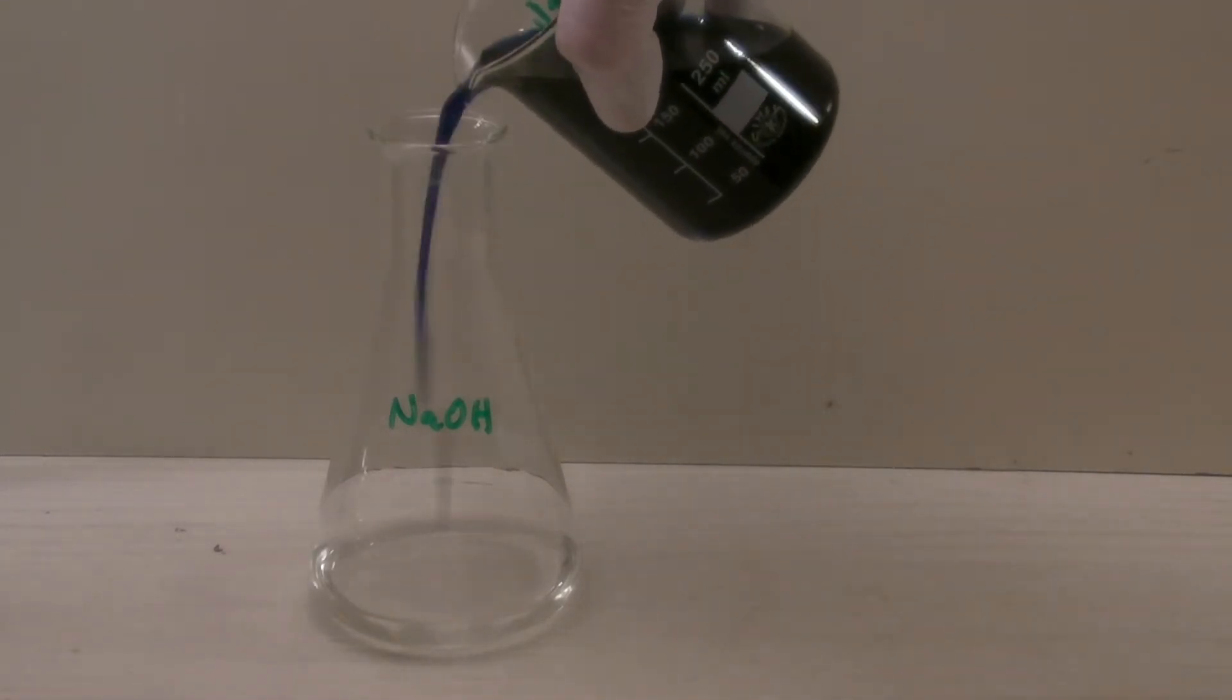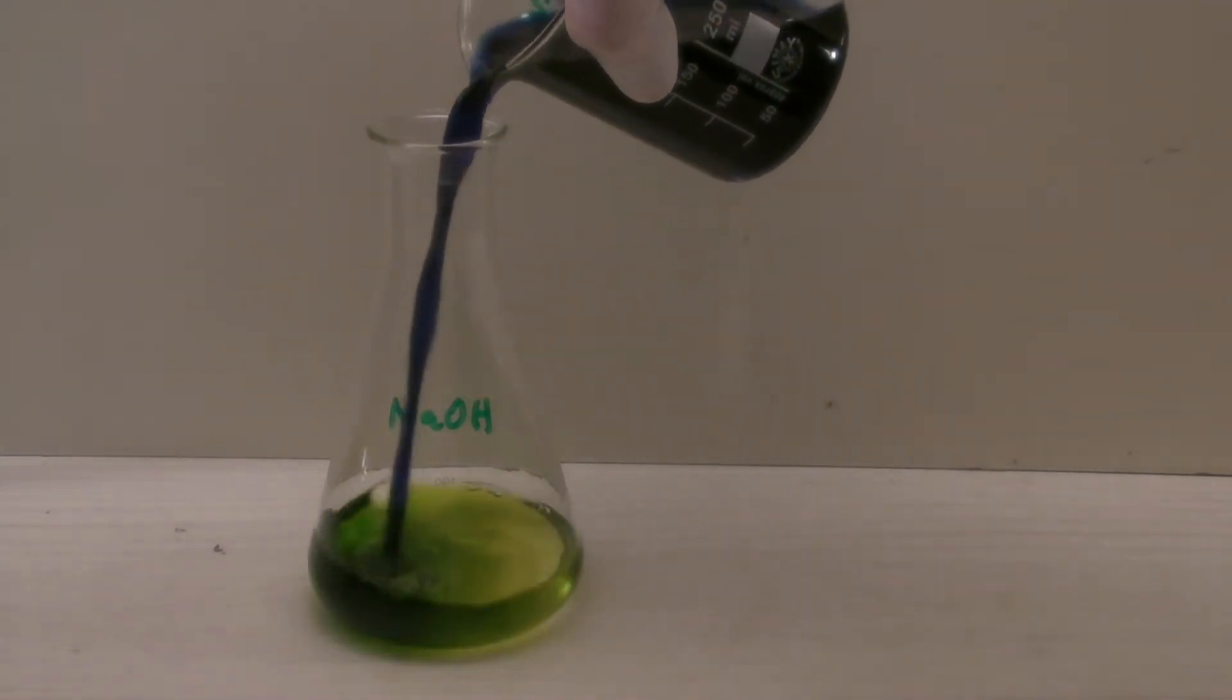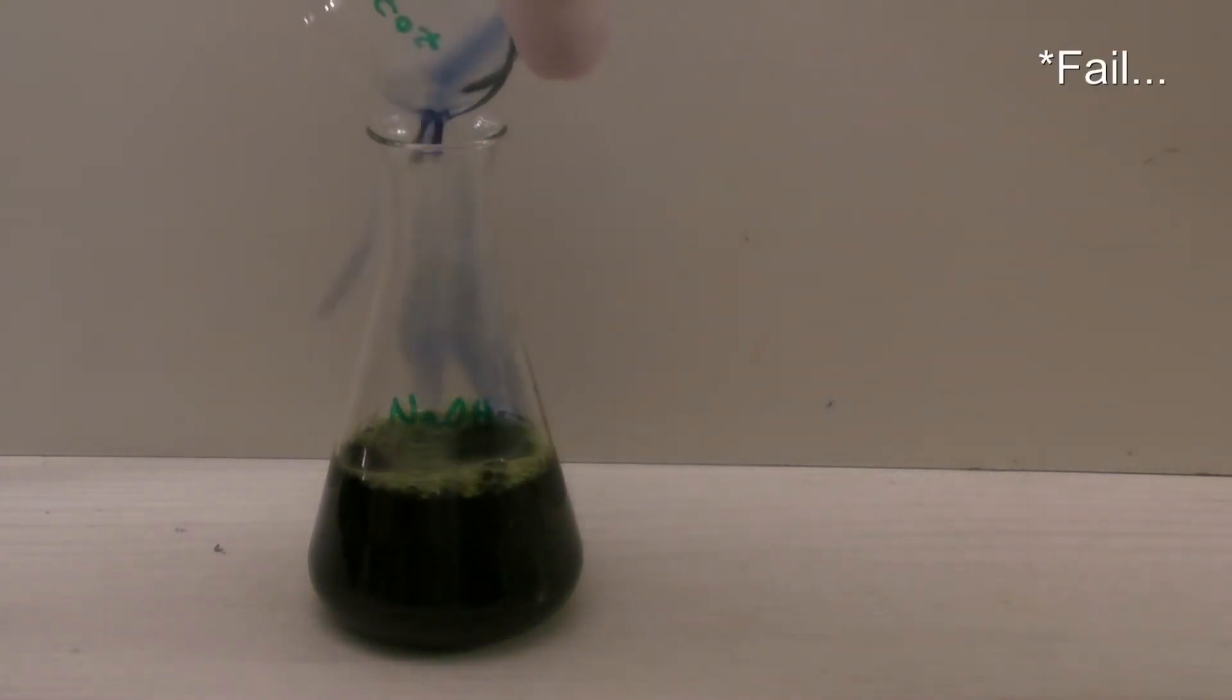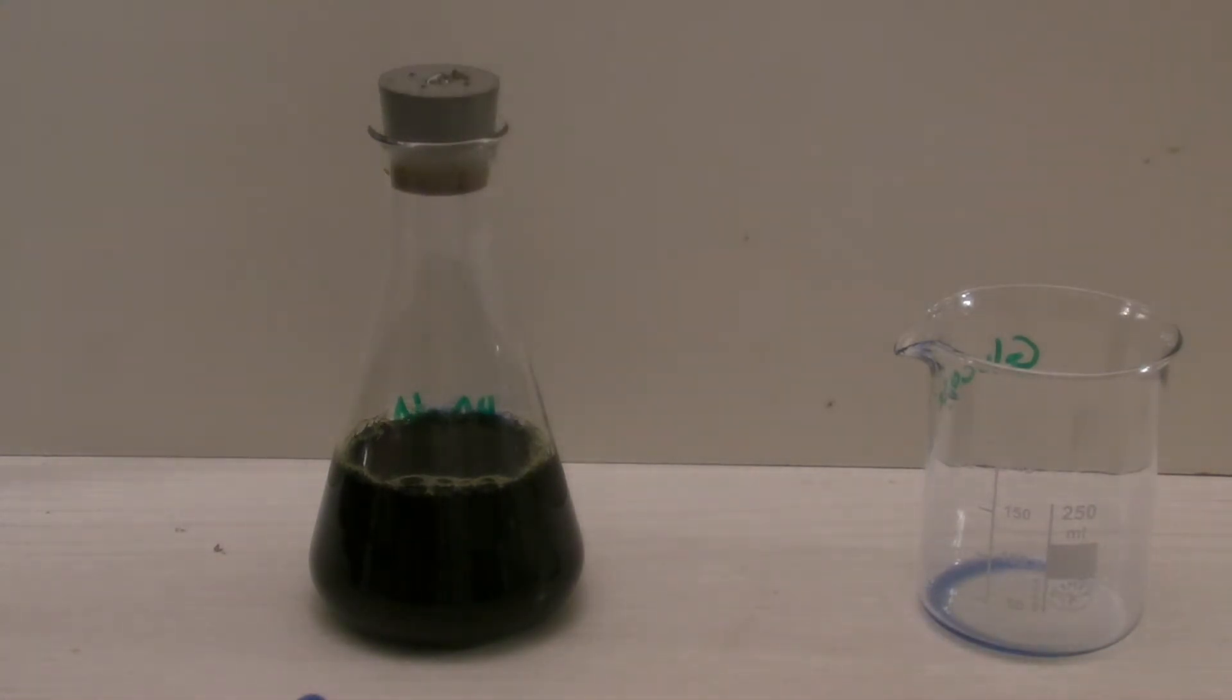Then the indigo carmine solution was added to the Erlenmeyer flask, where it shouldn't be forgotten to remove the stirring bar. Next, the flask was closed and left to sit until the solution changed its color completely to yellow.